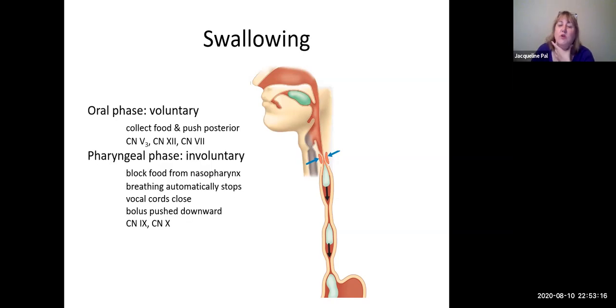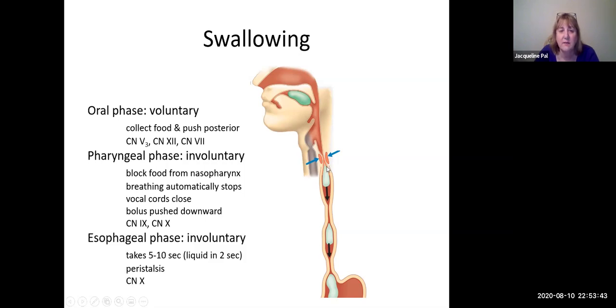After this, we're going to move into our pharynx, which is the back of the throat, and this is where it becomes involuntary and we can no longer stop it. The food is blocked from going up, it's blocked from going down into our airway. We actually automatically stop breathing, our vocal cords have closed, and so the food bolus is being pushed back posteriorly. And this is going to involve two cranial nerves: the glossopharyngeal and the vagus.